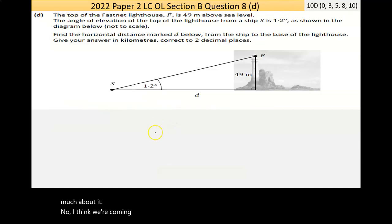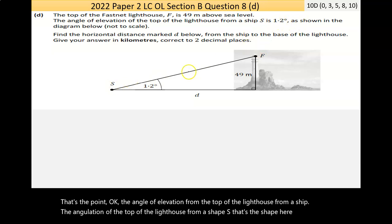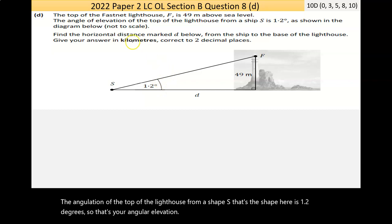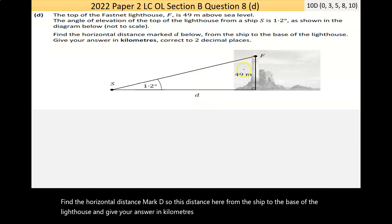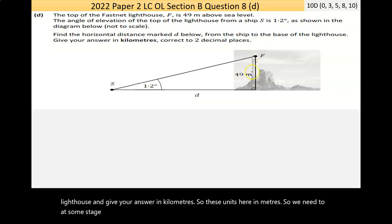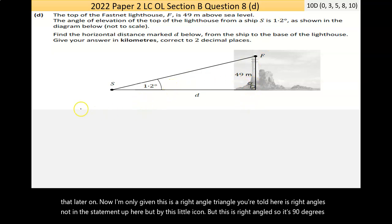Now, I think we're coming to the end. So, I think D is the last part. So, part D here says the top of the Fastnet lighthouse, F, is 49 meters above sea level. So, they have a lighthouse here. That's the point. The angle of elevation of the top of the lighthouse from a ship, S, that's the ship here, is 1.2 degrees. So, that's your angle of elevation. Find the horizontal distance, mark D, so this distance here, from the ship to the base of the lighthouse and give your answer in kilometers. So, these units here in meters, so we need to, at some stage, change the answer to kilometers by multiplying by 1,000. But we'll worry about that later on. Now, I'm only given, this is a right-angled triangle. You're told here it's right-angled, not in the statement up here, but by this little icon. But this is right-angled, so it's 90 degrees.